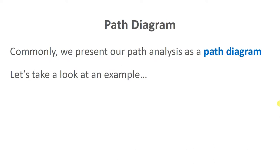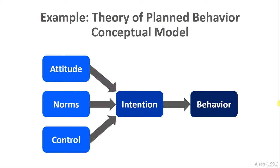One of the best places to start when talking about path analysis is the path diagram. One of the great things about path analysis is it really lends itself to a visual depiction of the relationships that we're proposing and aiming to test. When we visually depict our model, we typically call this a path diagram. I'll show you some conventions as we move along in terms of how we label things and the type of symbols and notation we use.